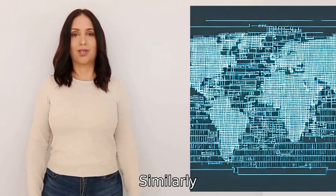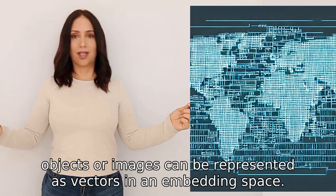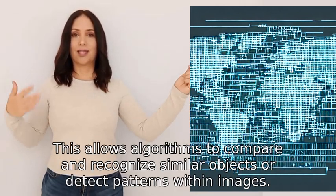Similarly, in image processing, objects or images can be represented as vectors in an embedding space. This allows algorithms to compare and recognize similar objects or detect patterns within images.